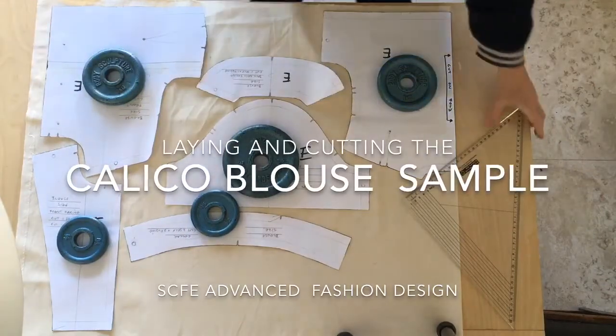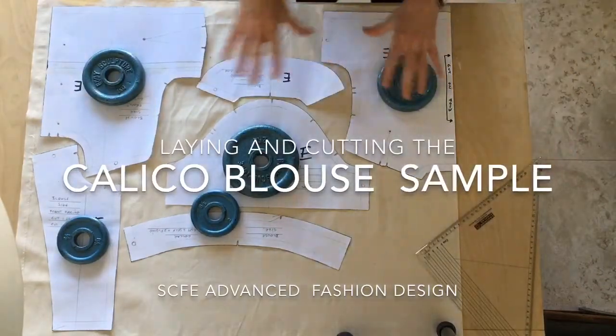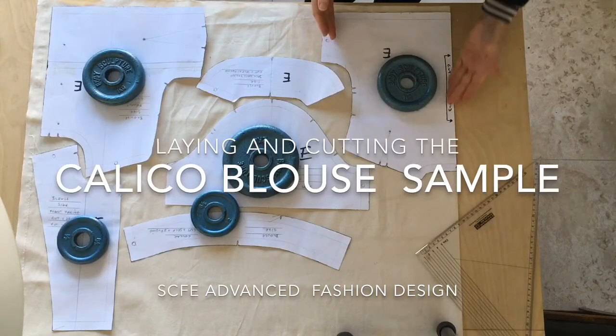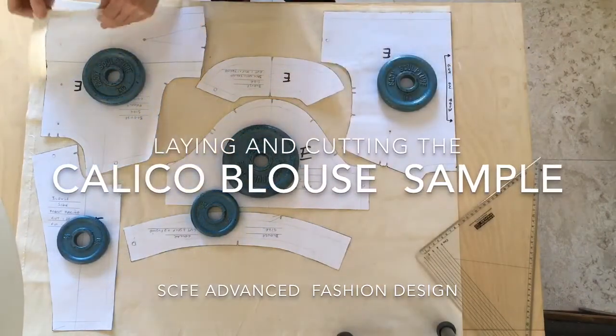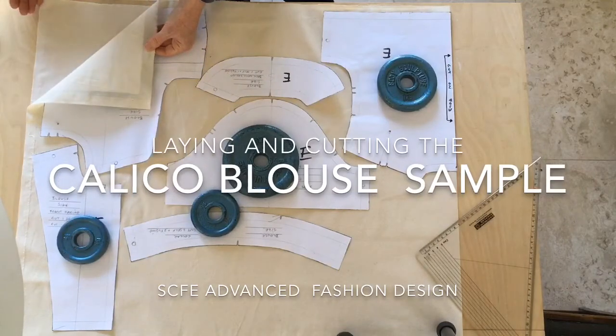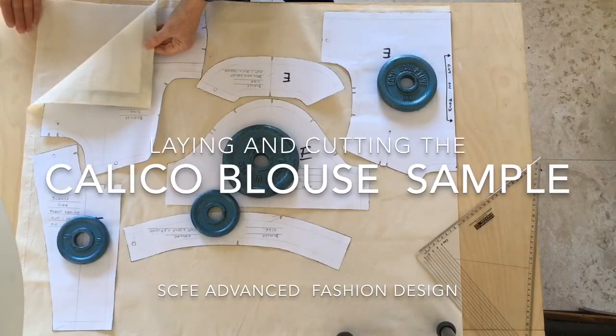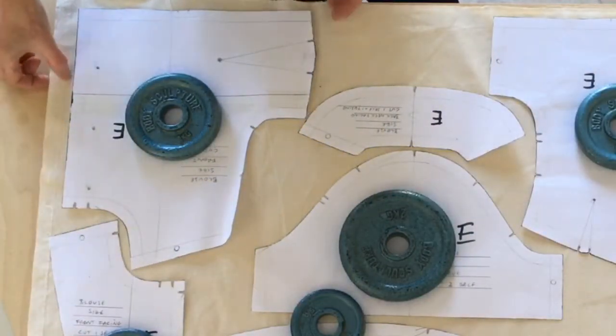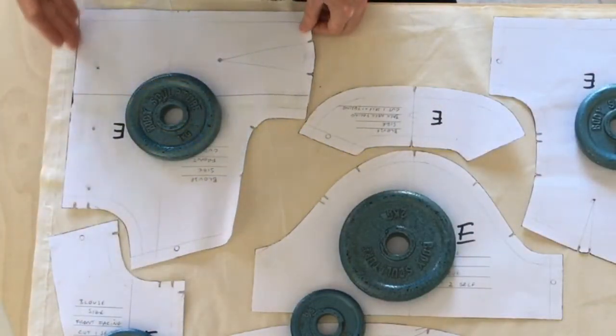I've got a pattern laid here for a blouse. I've got a back which is to cut on the fold, so the fabric is folded exactly 50-50. This piece over here I've used the selvage as a handy guide to get my straight of grain.